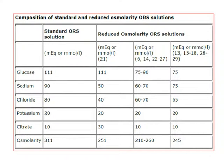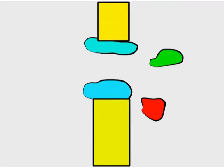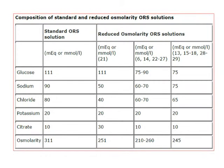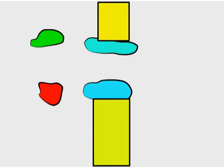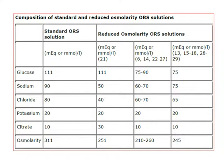ORS contains glucose, sodium, chloride, potassium, and citrate — citrate is added to increase shelf life. The reduced osmolarity ORS stands at around 245 millimoles per litre. This works through a co-transporter mechanism: one molecule of glucose takes with it one molecule of sodium, and where sodium goes, water follows. This mechanism remains intact even in very severe diarrhea, which is the basis of ORS therapy.